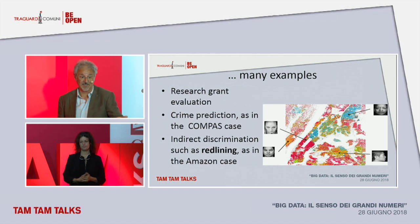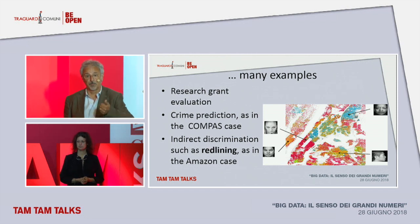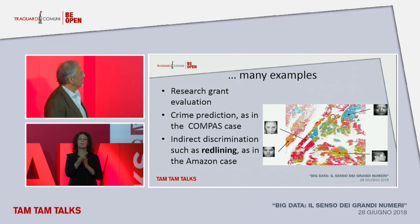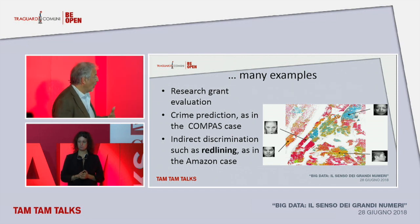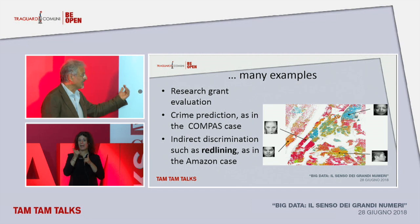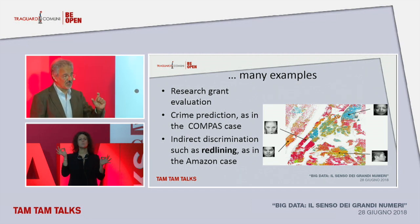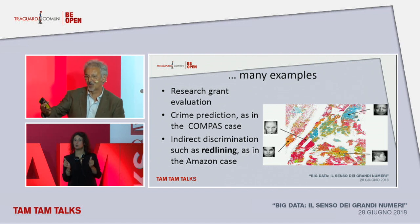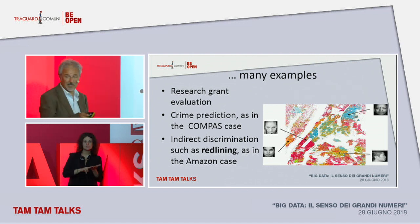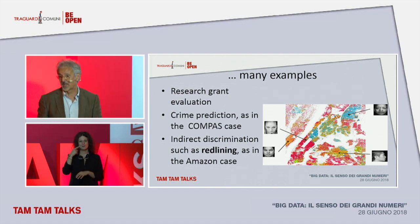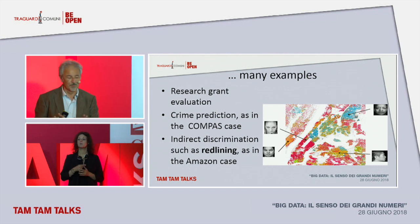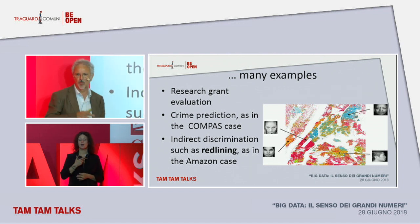There are many examples: cases where research projects were assessed, or the forecasting of crimes — also cases of indirect discrimination, as happens in insurance or in the Amazon case I showed earlier on. This practice is prohibited in the States. There is a law prohibiting redlining — that is to say, granting a loan based on the area where you live.